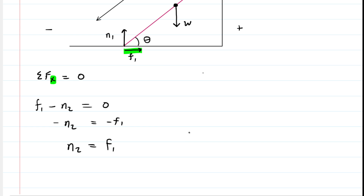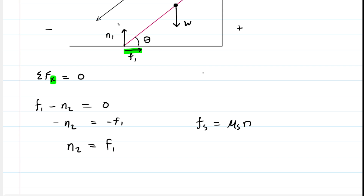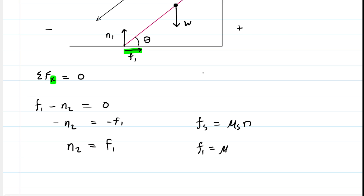F1 is a static frictional force, and static friction has the form of a coefficient of static friction multiplied by a normal force. Looking at where F1 acts, the normal force there is N1. So F1 equals the coefficient of static friction μs multiplied by N1. We substitute this expression for F1 into our equation and put that on hold for now.